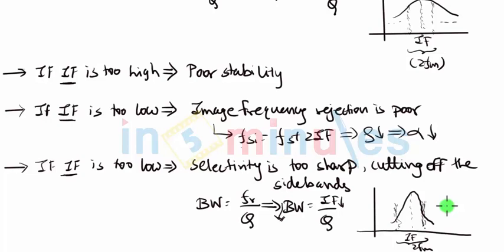So IF should not be too low again to make sure that the bandwidth of the filter does not reduce below the desired value of twice FM.